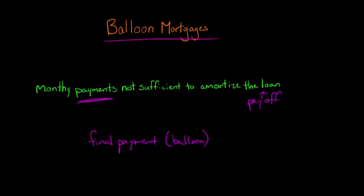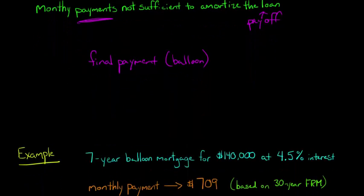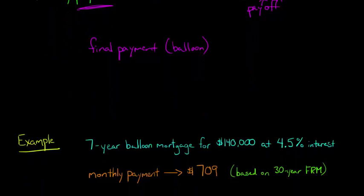It's a little easier if I just get into an example. Let's say that we had a seven-year balloon mortgage for an amount of $140,000 and the interest rate you're being charged is 4.5% interest.